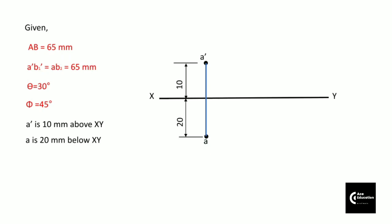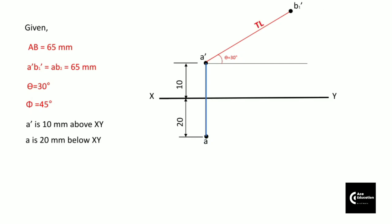Now once you get these points, from point A' we can mark the true length A'B1' at an angle of theta. We will measure angle theta that is 30 degrees and mark the true length, so here we get point B1'. This true length measures 65mm. Once you get B1' you can draw the locus of point B'. B1' and B' will lie on the same locus.